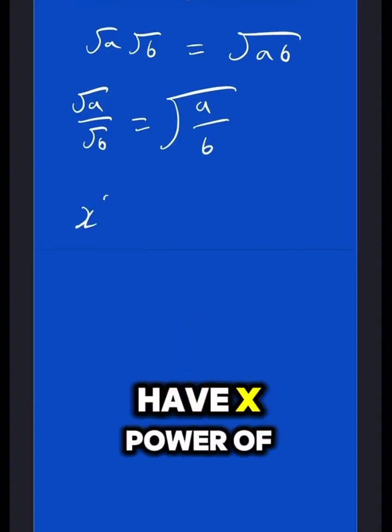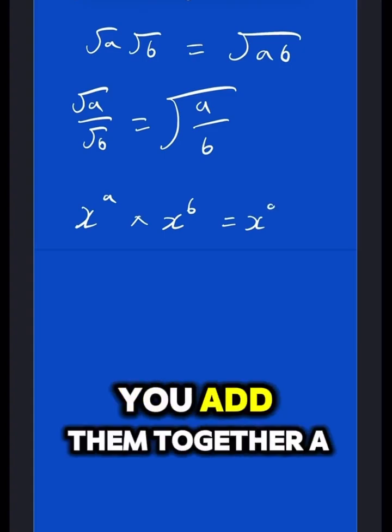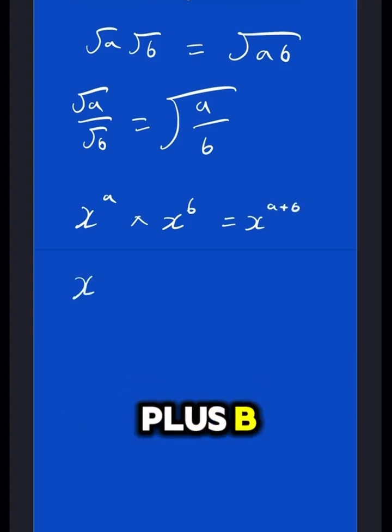Amazing. Now, also, if you have x to the power of a times by x to the power of b, that would be x to the power of, you add them together, a plus b.